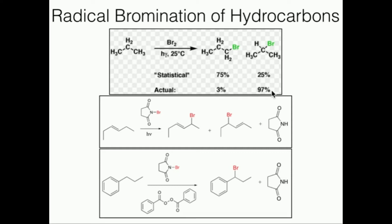The general rule of thumb for radical bromination is that the highest degree position is always what gets brominated. Comparing primary, secondary, or tertiary — particularly tertiary is selectively brominated. If we don't have a tertiary position, then any secondary will be preferentially brominated. You basically look at the carbon atom with the most carbon substituents, and that's the one that gets brominated.